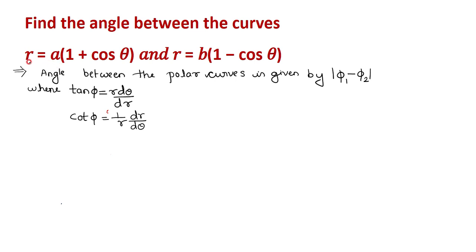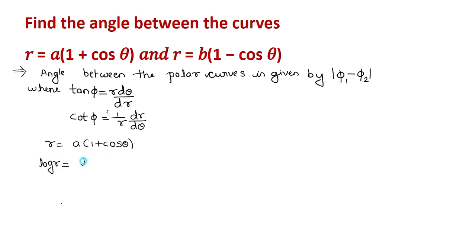We will find the angle between the radius vector and tangent for the first curve, and also for the second curve, then take their difference. For the first curve r = A(1 + cosθ), we can differentiate with respect to θ and multiply, or take log to directly get the form (1/r)(dr/dθ). So, take log on both sides: log r = log A + log(1 + cosθ).